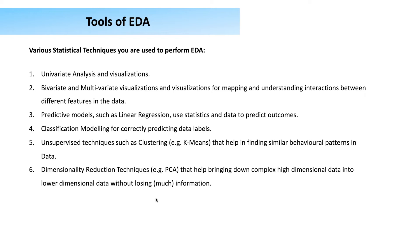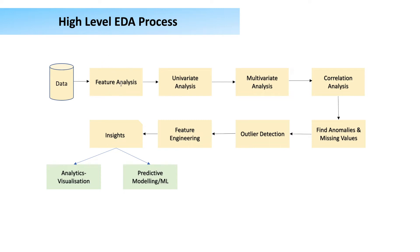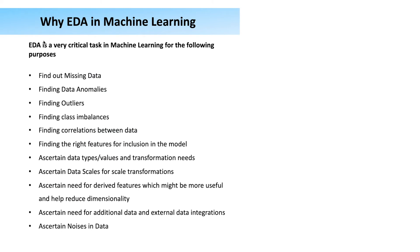The high-level EDA process flow begins with input data, followed by feature analysis including univariate and multivariate analysis, correlation analysis between features, identification of anomalies and missing values, outlier detection, and feature engineering for any required transformations. After all analysis is done, insights are extracted and the results feed into two broad output areas: analytics and visualization for solving a business problem directly, and pre-processed data going into machine learning for predictive modeling.